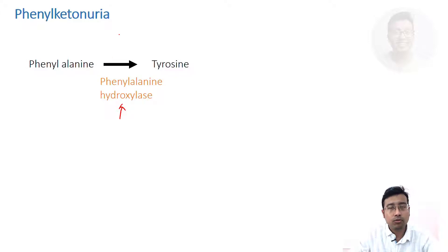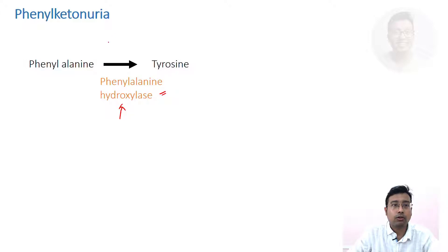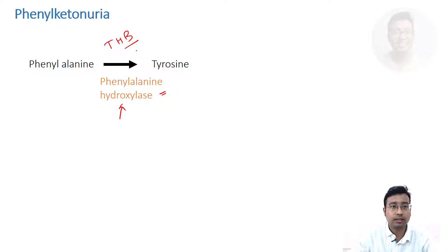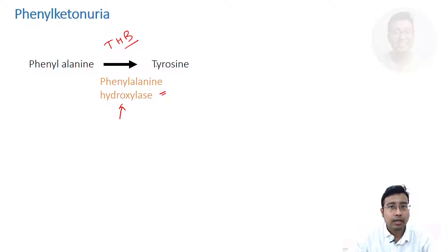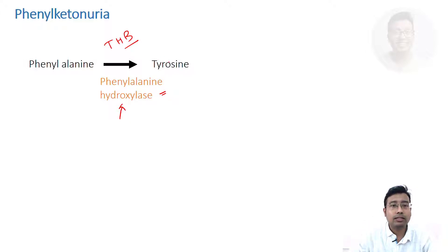What does this enzyme do? We have already read in phenylalanine and tyrosine metabolism that phenylalanine is converted to tyrosine by this enzyme. The cofactor is tetrahydrobiopterin. In almost any hydroxylation reaction, this is the cofactor. So phenylalanine is converted to tyrosine.